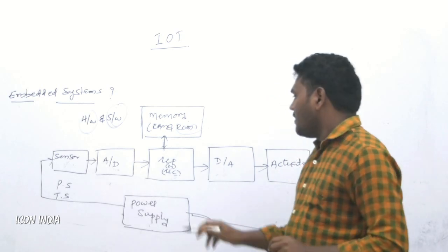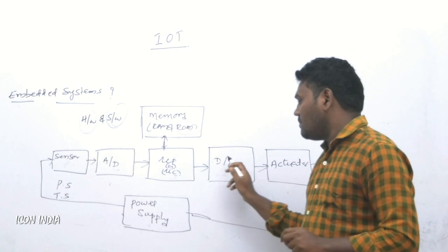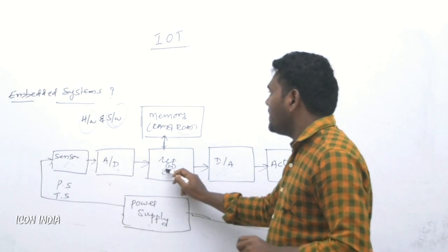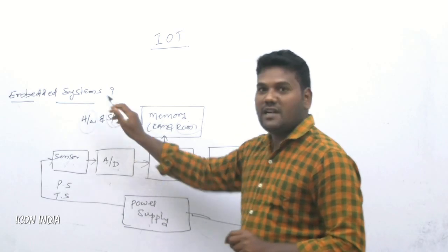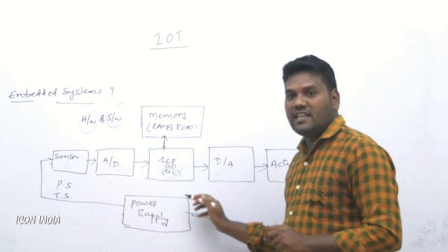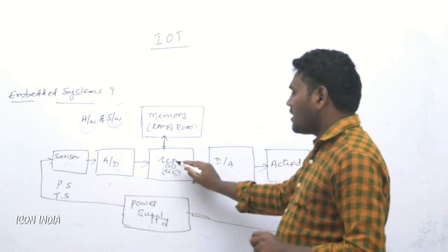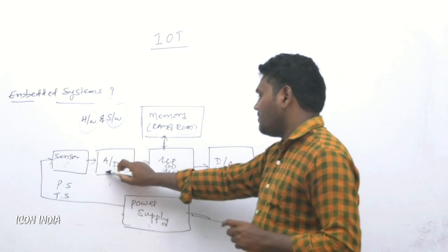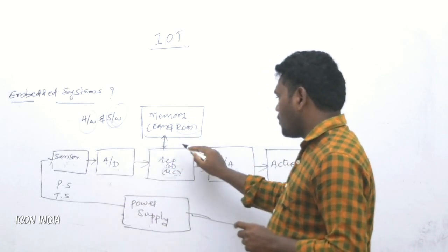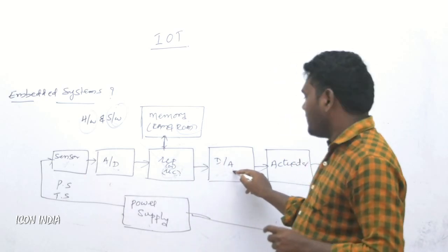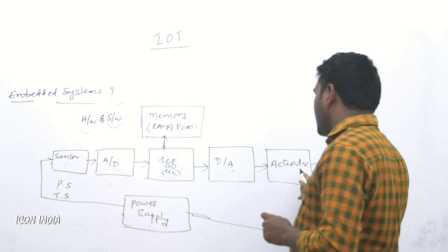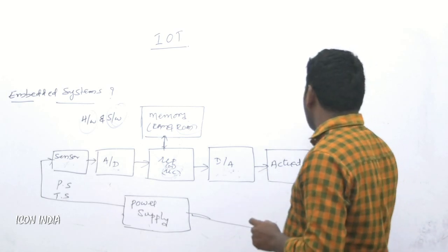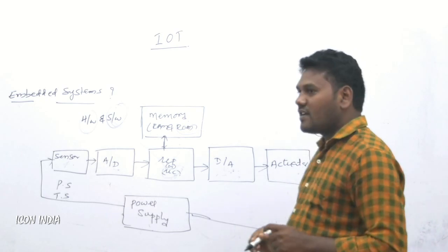Next is the D-to-A converter — whatever digital value is there, that digital value will be converted to an analog value. The microcontroller is the main heart of the embedded system; without the microcontroller, we cannot do anything. The processing of whatever information and programming code is there will be done here, then it is given to the D-to-A converter, and finally we get the actuator output — temperature values or pressure values.